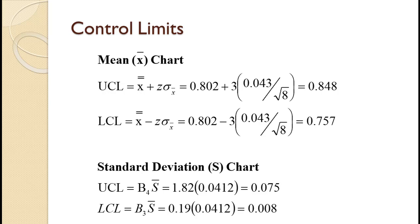For the S chart, the average sample standard deviation of 0.0412 is the centerline. We multiply it times B4 of 1.82 to get the upper control limit of 0.075, and by B3 of 0.19 to get the lower control limit of 0.008.